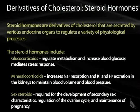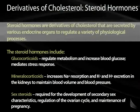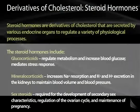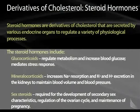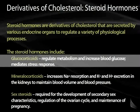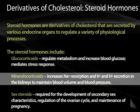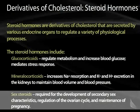Another derivative of cholesterol is the steroid hormones — derivatives of cholesterol secreted by endocrine organs to regulate a variety of physiologic processes. The main steroid hormones are glucocorticoids, mineralocorticoids, and sex steroids. Glucocorticoids regulate metabolism, increase blood glucose, and mediate stress and inflammatory responses. Mineralocorticoids increase sodium resorption and potassium and proton excretion in the kidneys to maintain normal blood volume and pressure. Sex steroids are required for secondary sex characteristics, regulation of the ovarian cycle, and maintenance of pregnancy.